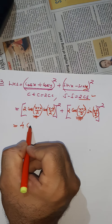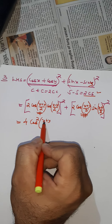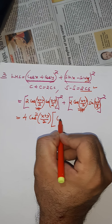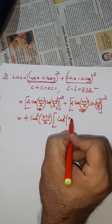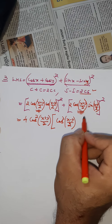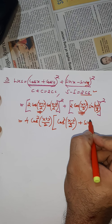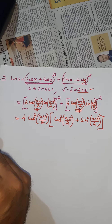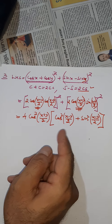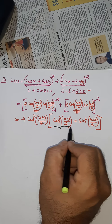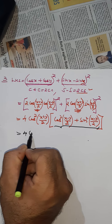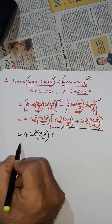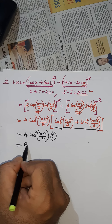Taking out the common factor, we get 4cos²((x+y)/2) times the bracket: cos²((x−y)/2) + sin²((x−y)/2). Inside the bracket is cos²θ + sin²θ = 1. So the result is 4cos²((x+y)/2) × 1 = 4cos²((x+y)/2), which is the RHS.